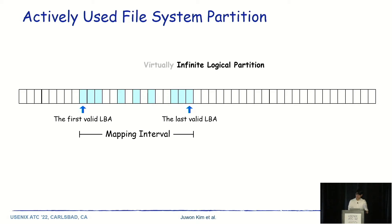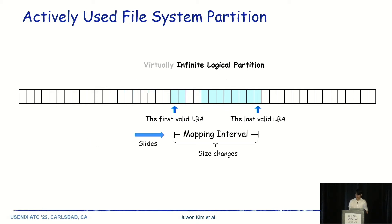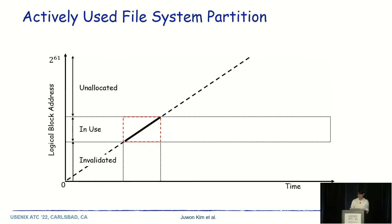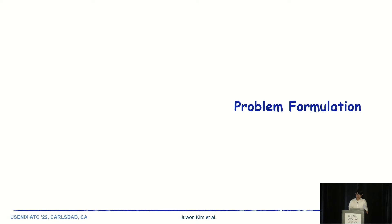This figure depicts the actively used file system partition in the infinite logical partition. We name the actively used file system partition as the mapping interval. The mapping interval starts from the first valid logical block and ends at the last valid logical block. The mapping interval is updated by append and discard. When the head of the mapping interval is discarded, its head moves to a higher LBA. When a block is appended, the tail of the mapping interval moves toward a higher LBA. Likewise, the mapping interval slides toward the higher LBA and its size can change.